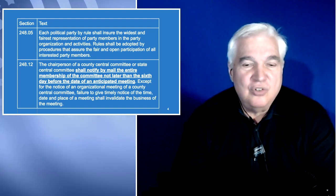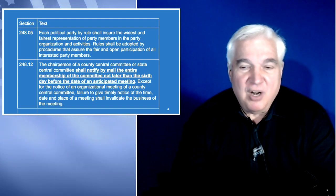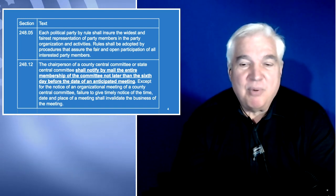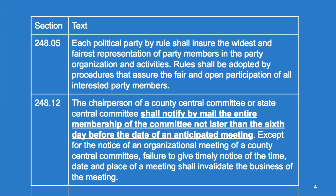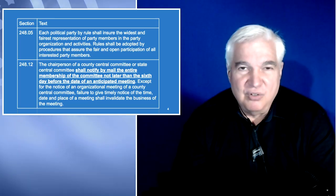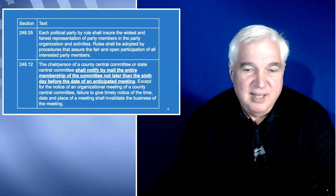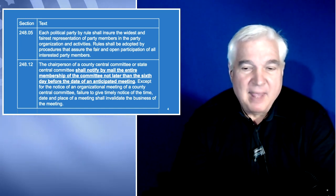Section 248.05: each political party by rule shall ensure the widest and fairest representation of party members in the party organization and activities. Rules shall be adopted by procedures that assure fair and open participation of all party members. This refers to everyone who is registered as a Democrat within the Democratic Party. You'll see how that manifests itself in the next couple of sections.